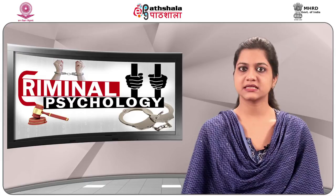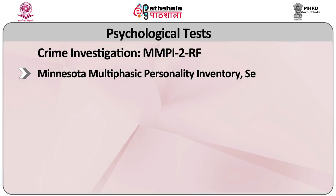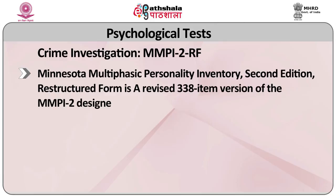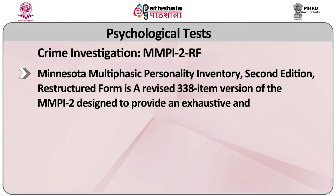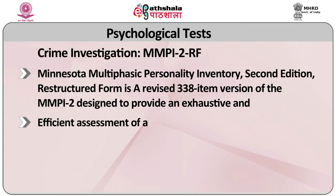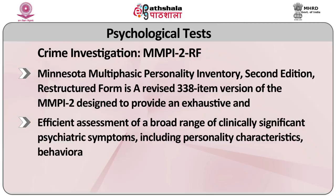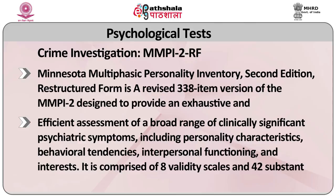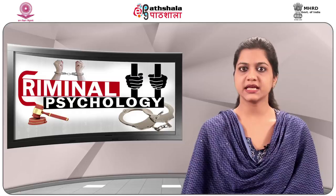MMPI-2-RF: Minnesota Multiphasic Personality Inventory Second Edition Restructured Form is a revised 338-item version of the MMPI-2, designed to provide an exhaustive and efficient assessment of a broad range of clinically significant psychiatric symptoms including personality characteristics, behavioral tendencies, interpersonal functioning and interests. It is comprised of 8 validity scales and 42 substantive scales. The test is appropriate for individuals 18 years and older who have a reading level between 4th and 5th grade.